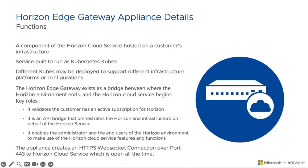Next, we'll talk about the Horizon edge gateway appliance details. A component of the Horizon Cloud Service hosted on a customer's infrastructure is the Horizon edge gateway, and it's built to run as a Kubernetes cluster. Different clusters may be deployed to support different infrastructure platforms or configurations. The Horizon edge gateway exists as a bridge between where the Horizon environment ends and the Horizon Cloud Service begins. Its key roles include validating that the customer has an active subscription for Horizon, acting as an API bridge that orchestrates Horizon and infrastructure on behalf of the Horizon service, and enabling administrators and end users to make use of the Horizon Cloud Service features and functions.